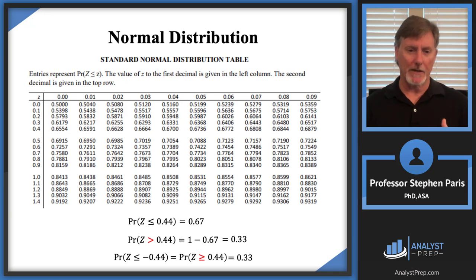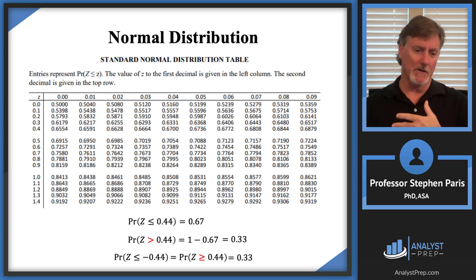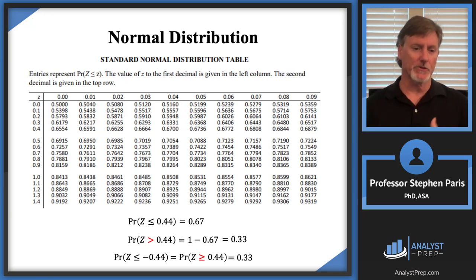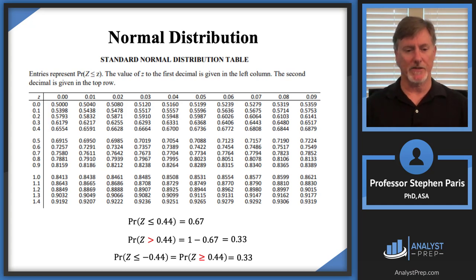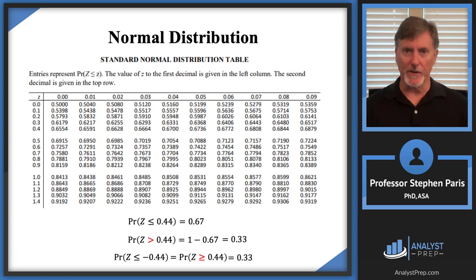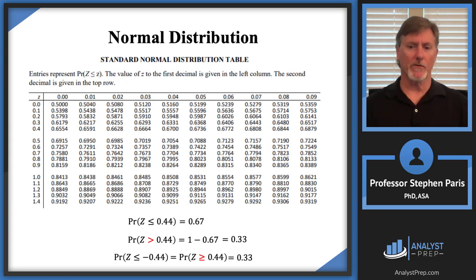Because of the continuous nature of the distribution, strict versus non-strict inequalities give the same probability — the values at the endpoints don't affect the calculation.